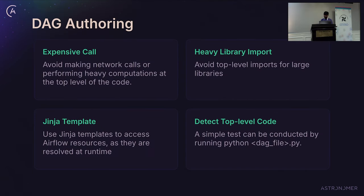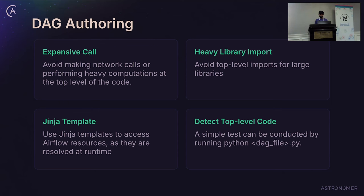I'll discuss basically three use cases and one detection tactic: how you can handle expensive calls in your DAG, how you can import heavy libraries the right way, what benefit you can take from Jinja templates, and most importantly, how you can detect top-level code in your DAG. Most of the time we get questions like 'DAG parsing is taking lots of time' — so this is how you handle that.